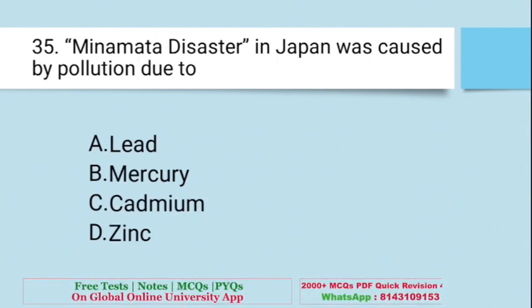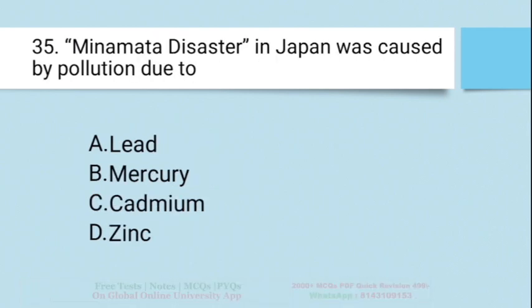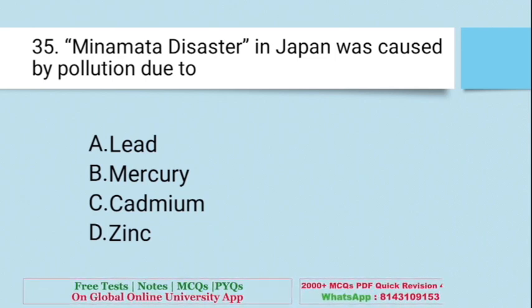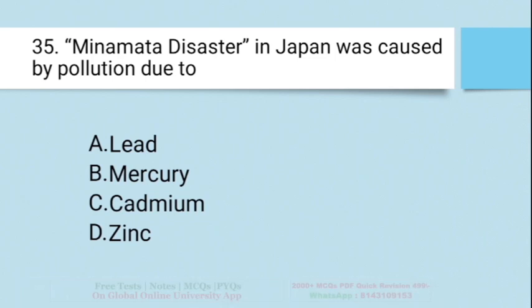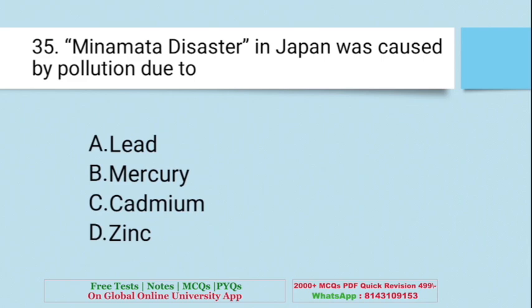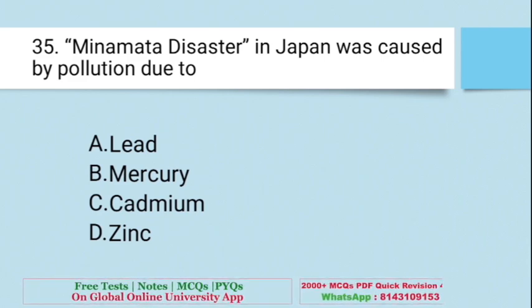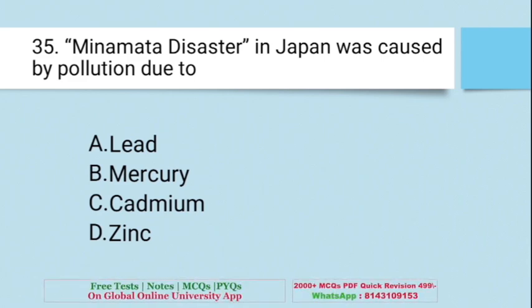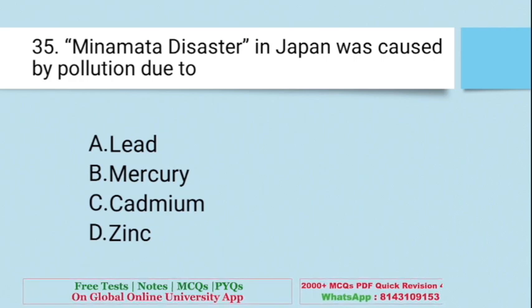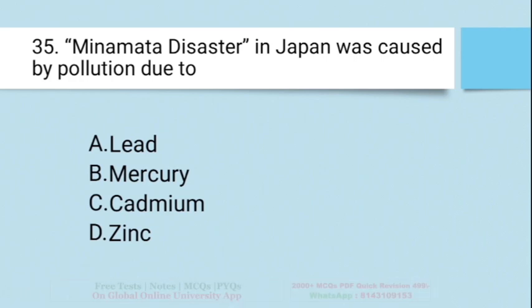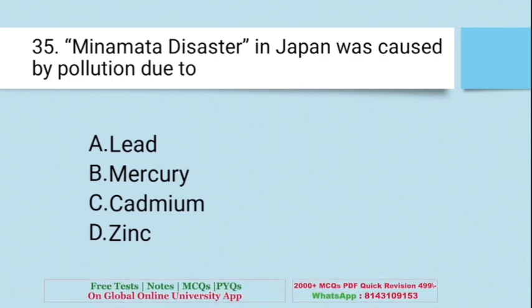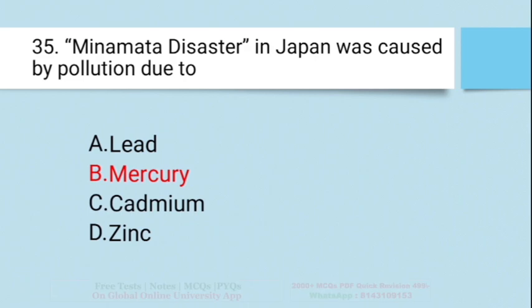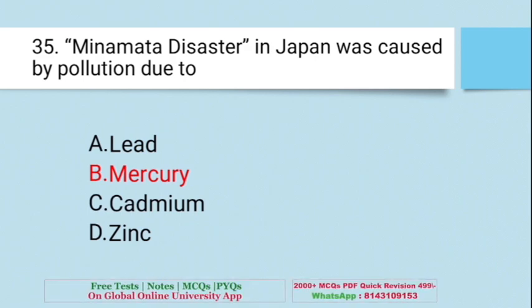Question: Minamata disaster in Japan was caused by pollution due to — A. Lead, B. Mercury, C. Cadmium, D. Zinc. The right answer is B — Mercury.